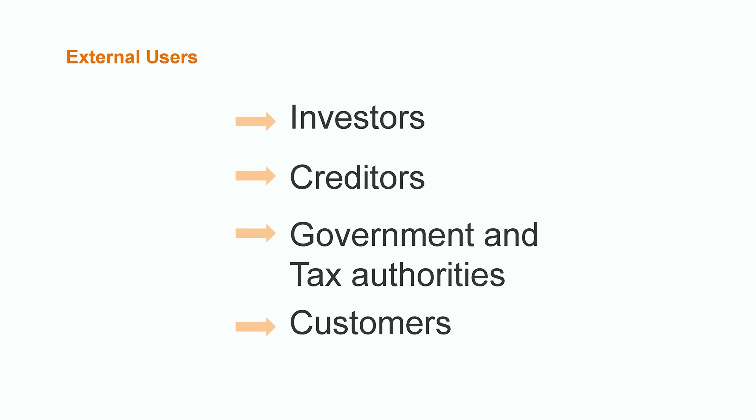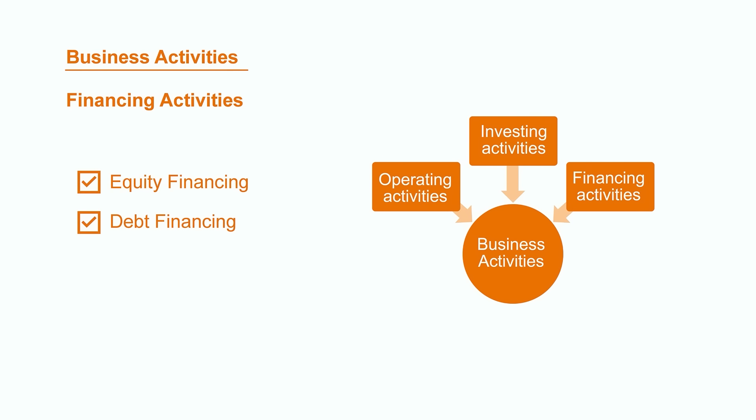Now that we have a strong understanding of who some of the key external users are, let's take a high-level look into the business activities that can help drive their decisions. In the world of accounting, there are three categories of business activities: financing activities, investing activities, and operating activities. Anytime we have an accounting transaction where money changes hands, it gets grouped into one of these three categories.